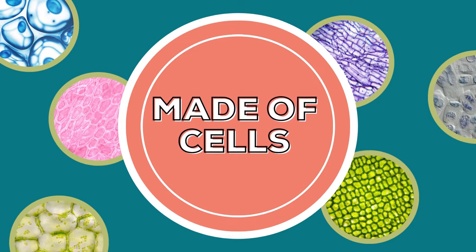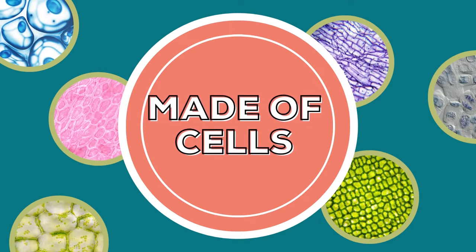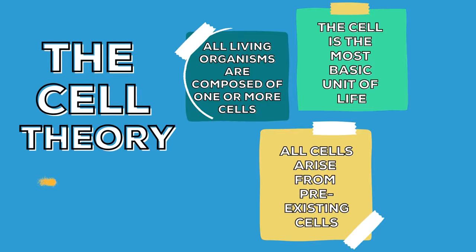First things first. All living things are made of cells, or they're organized. The cell theory states that all living things are made of cells. Now, that can be one cell, or unicellular, like an amoeba or bacteria, or many cells, or multicellular, like a giant blue whale, a super cute chameleon, or majestic redwood trees. We are organized.